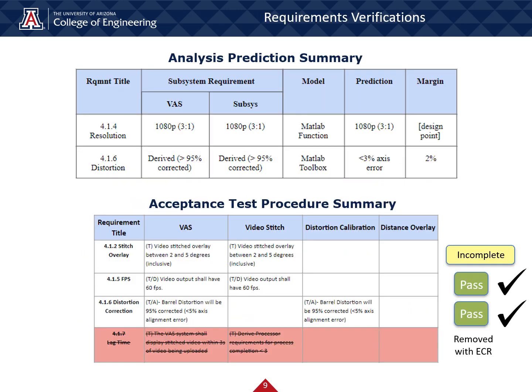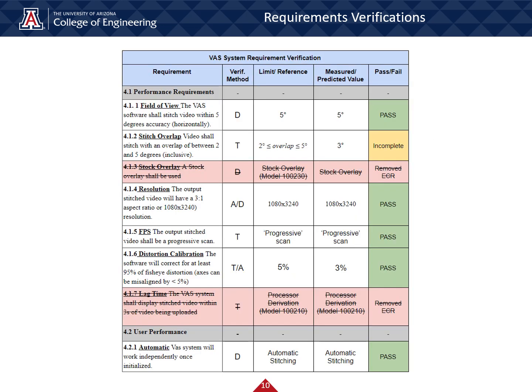Here we show a quick summary of both the analysis predictions, including calculated margins, as well as our ATP summary with one test procedure still being clean — this will be discussed further on. Our complete verification table demonstrates that we have passed all of our requirements except the stitch overlap requirement. This is marked incomplete due to the fact that we were not able to adapt this test procedure quickly enough after our project scope change, such that we were not able to complete it at this time.